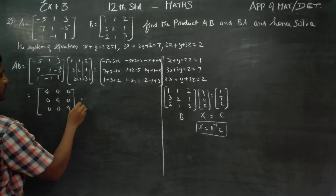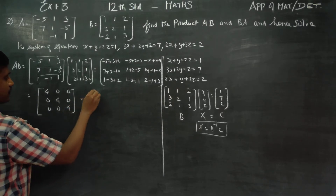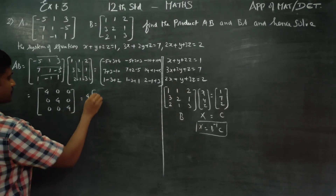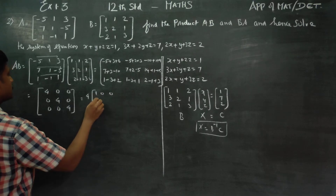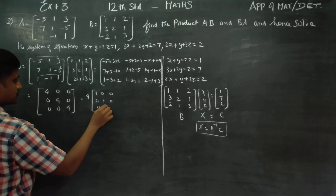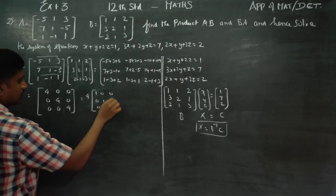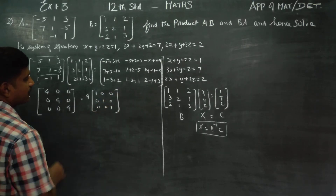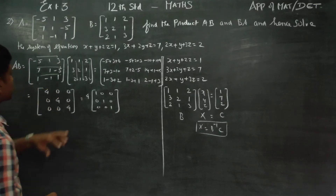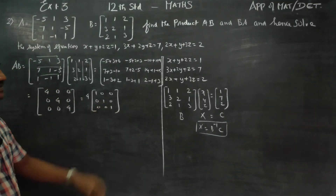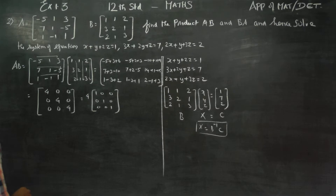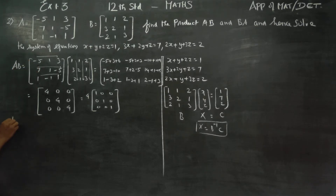If you write it out, A into B gives the matrix [4,0,0; 0,4,0; 0,0,4], which is 4 times the identity matrix. This is A into B. This is the result.